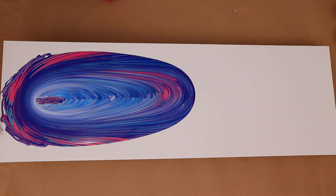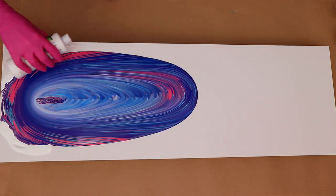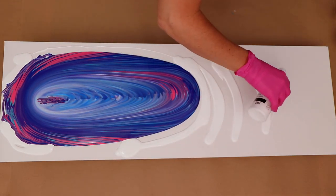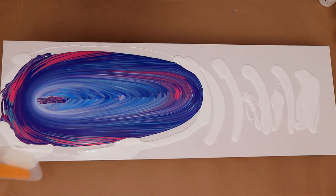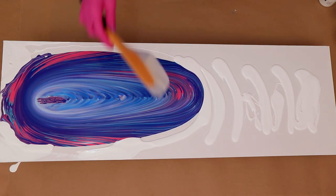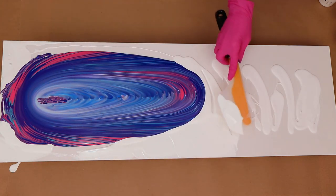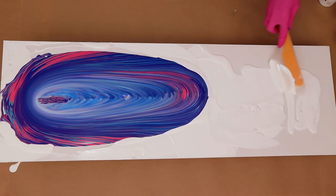Alright, and so now what I'm gonna be doing is adding some white around my paint already there. And that, of course, is going to help smooth, you know, it's gonna help the other paint glide nicely over. I'm smoothing it out with my spatula. You guys, if you've seen my videos before, you know that that's my favorite one.